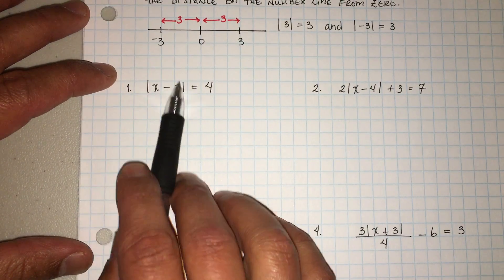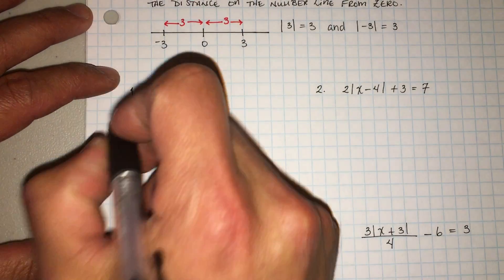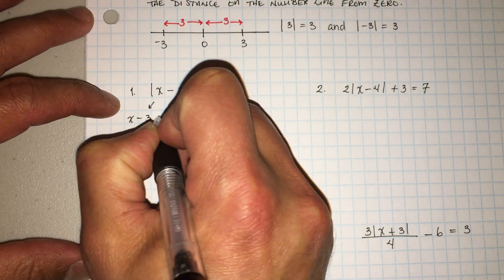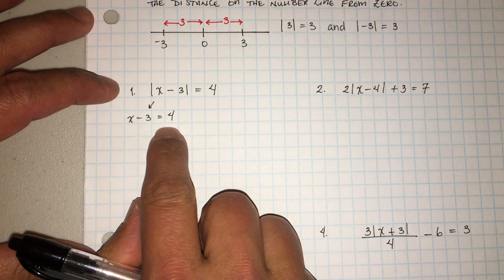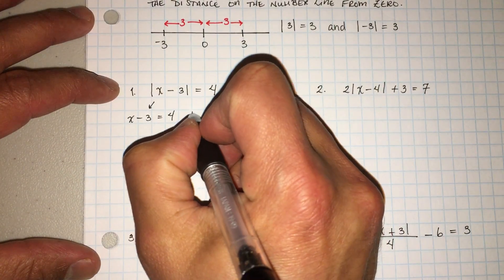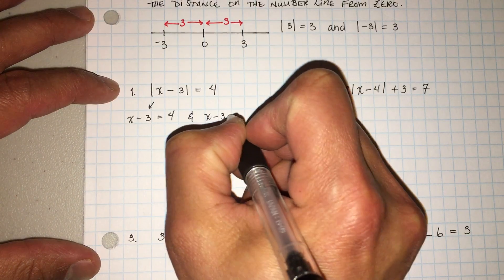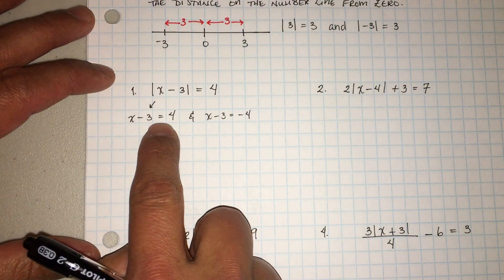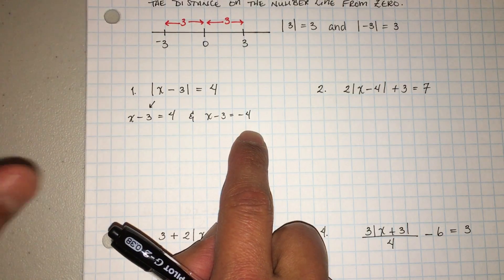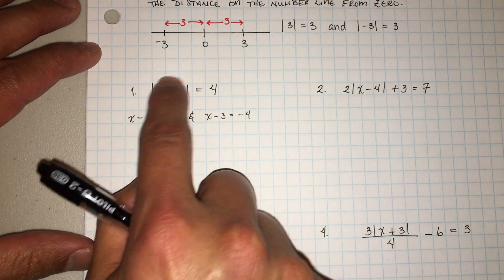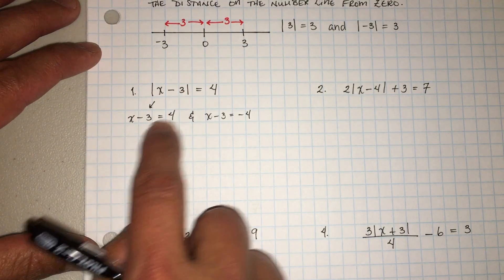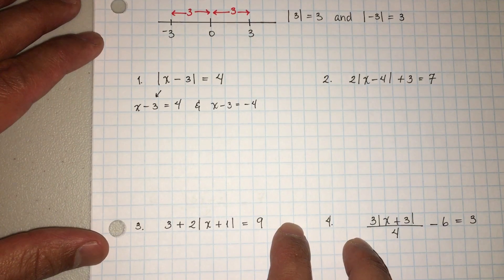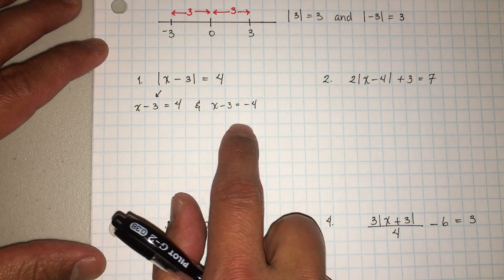What you want to do is whatever is inside the absolute value you're not going to change. You're going to write two solutions: x minus three is equal to the positive four, and then x minus three is equal to the negative four — el positivo y el negativo. Nothing on the inside changes, just the outside, and I do that on purpose just to keep it simple for you guys. So now we're going to solve this one and solve this one.